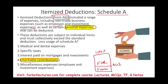Schedule A deductions are personal in nature. You could be an employee incurring those expenses, or you could have some investment interest, but they are personal — they don't belong to a business. If they belong to a business, then you have a Schedule C. These deductions are only beneficial if your itemized deductions are greater than the standard deduction.